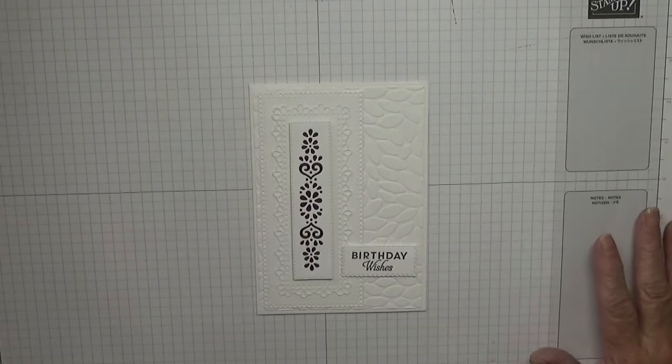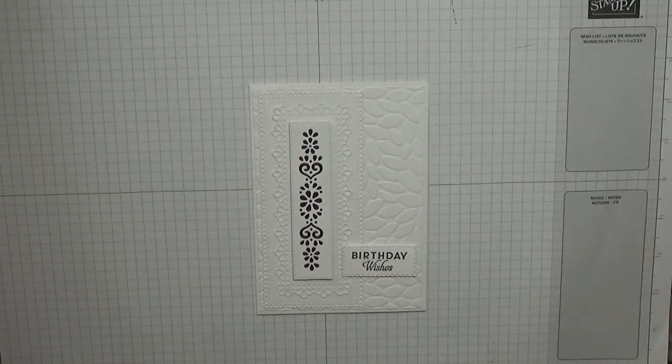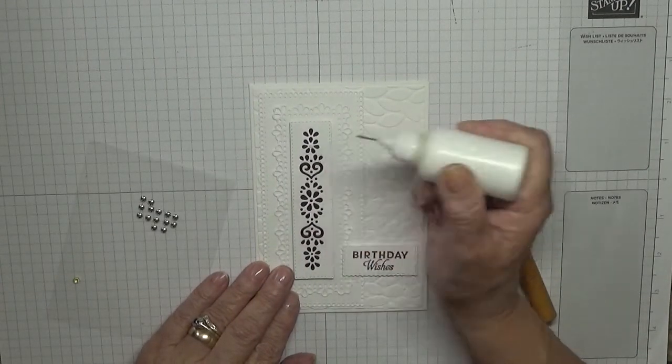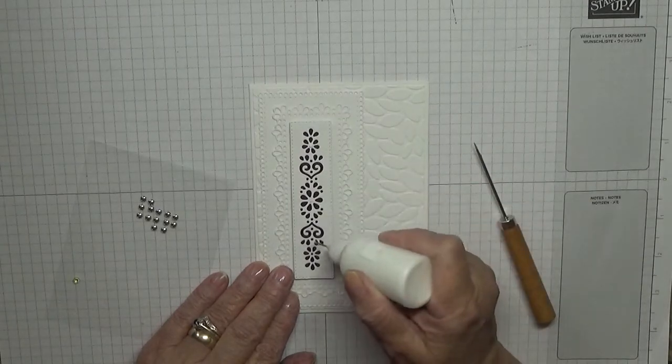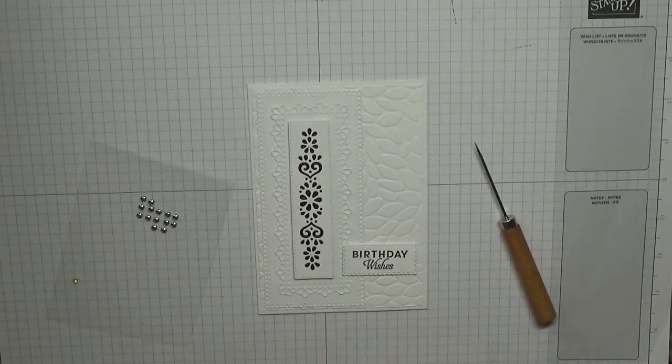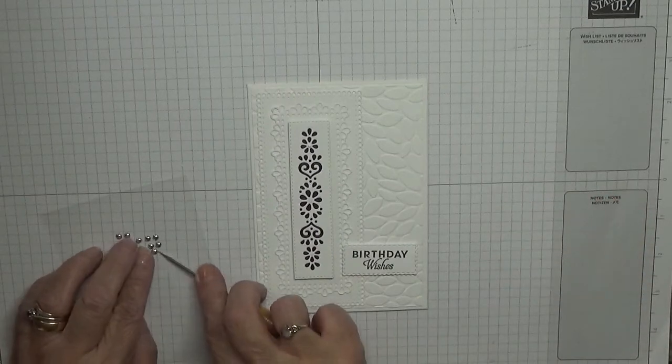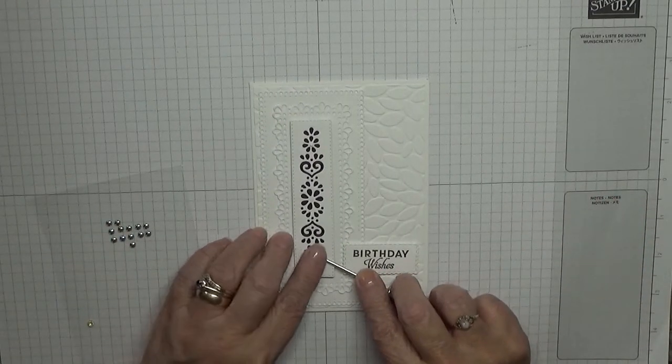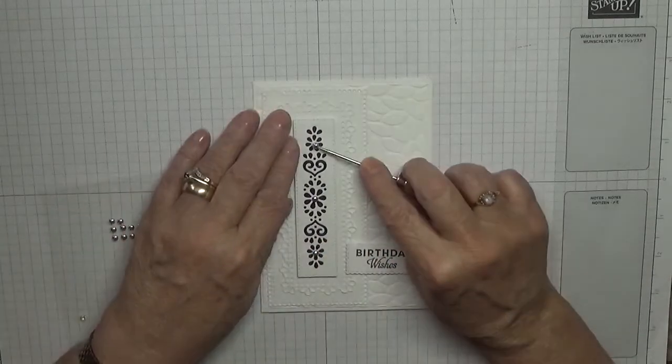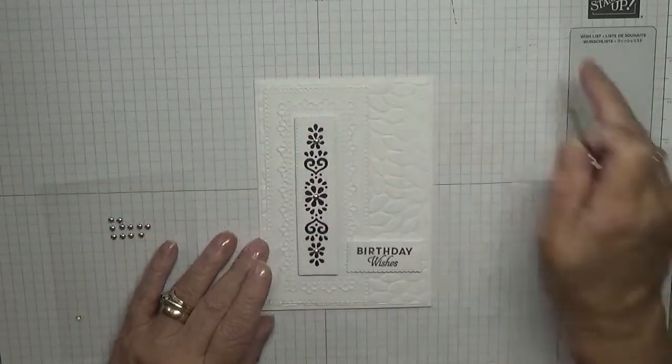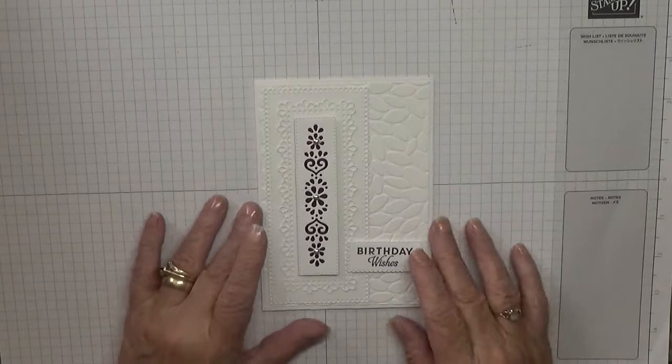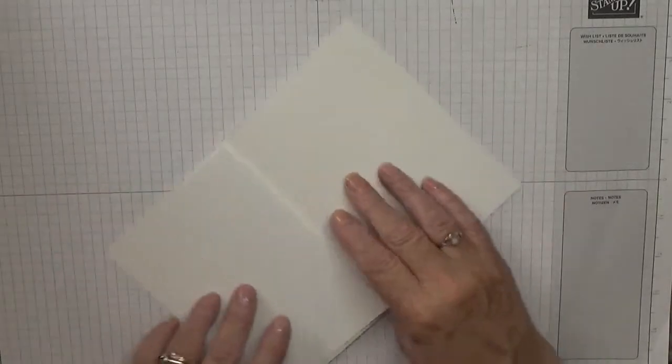Now all we need is some gems. I'm just going to place a little bit of glue in the middle of my flowers and place a gem on top. And move this middle bit in.